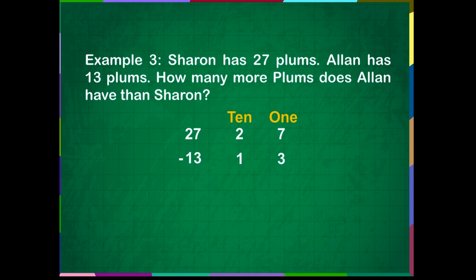First, let us subtract the ones place. 7 minus 3 is equal to 4. Now, let us subtract the tens place. 2 minus 1 is equal to 1.